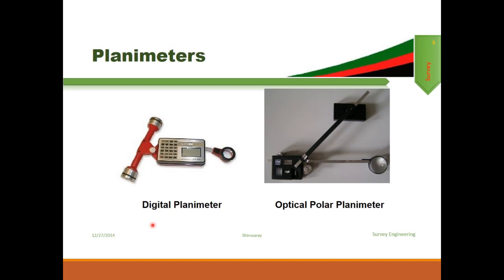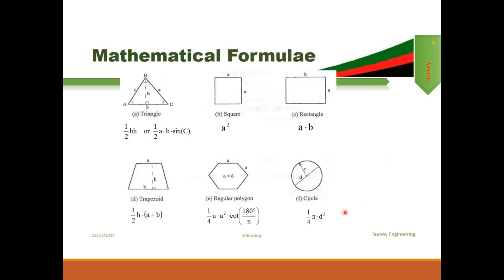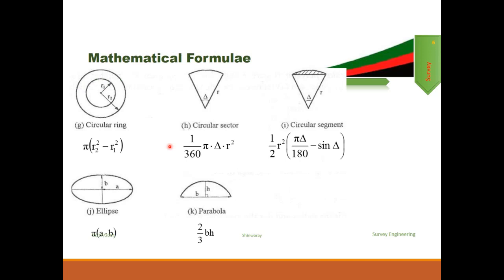This is a typical picture of a digital planimeter, and this is an optical polar planimeter. If you are dealing with regular figures like triangle, square, rectangle, or any other regular shape, you can simply put the values — the length of the side — into these formulae and get your required area. All these are different types of regular shapes having different area of cross-sections. But in reality, these kinds of regular figures rarely exist — in the field, you are always dealing with irregular figures or irregular boundaries.